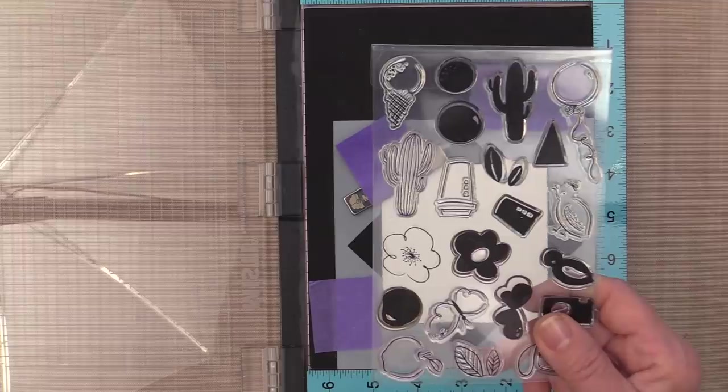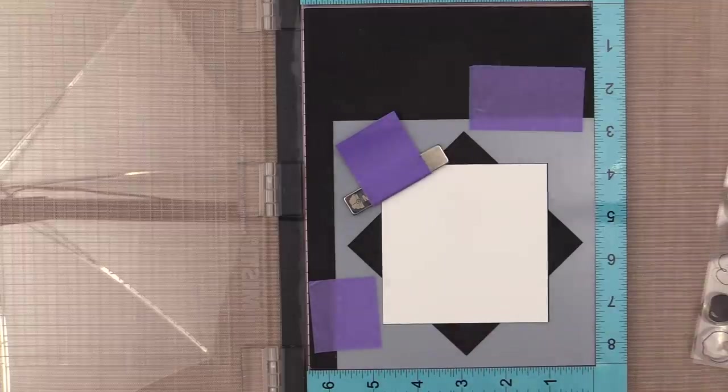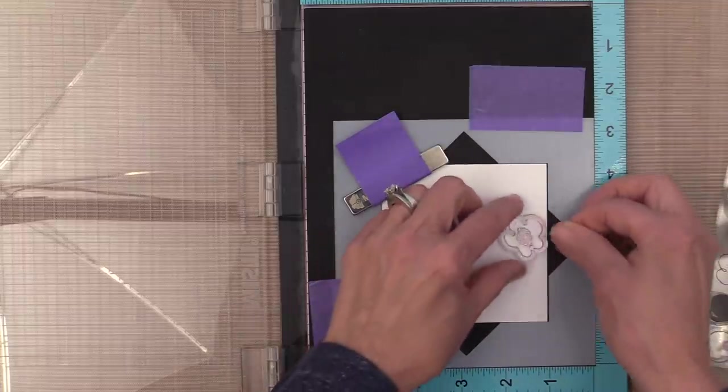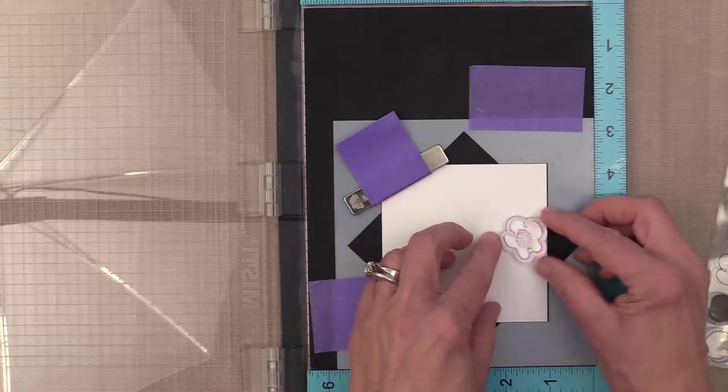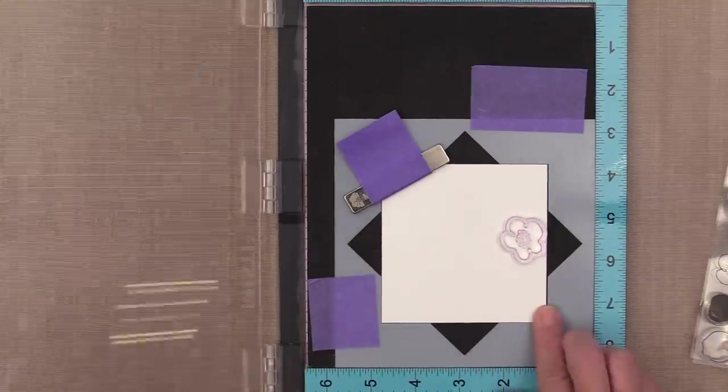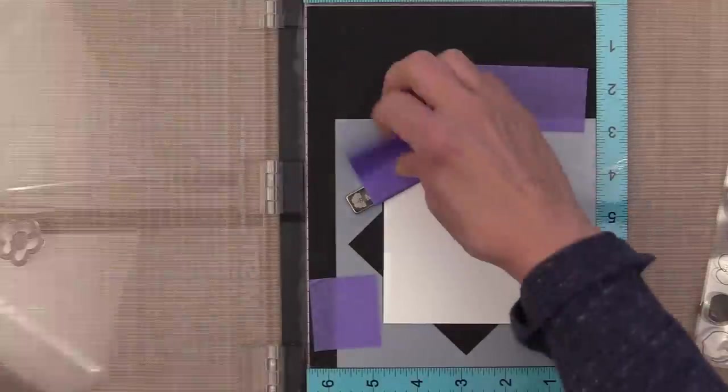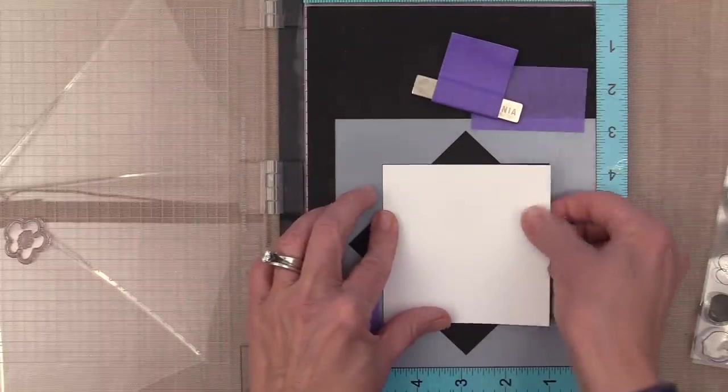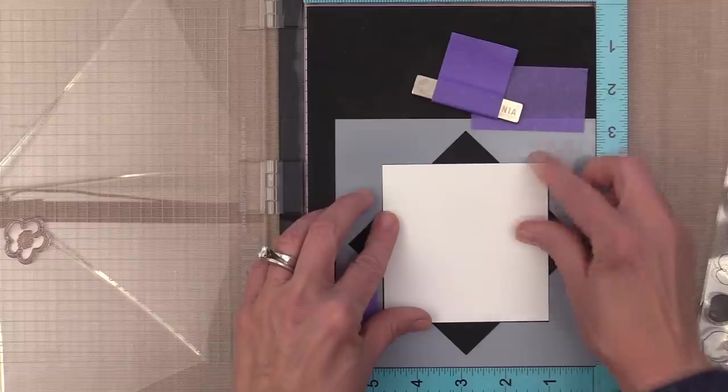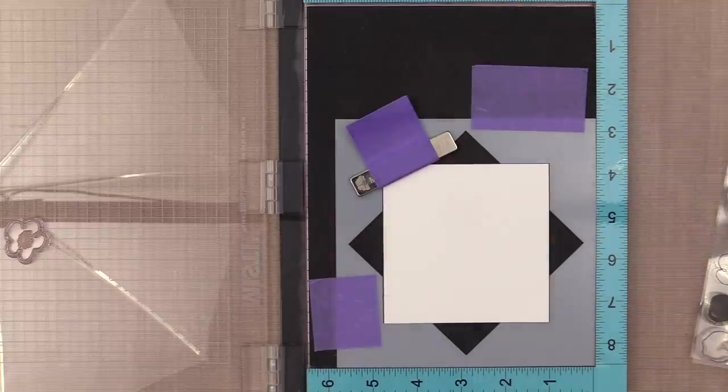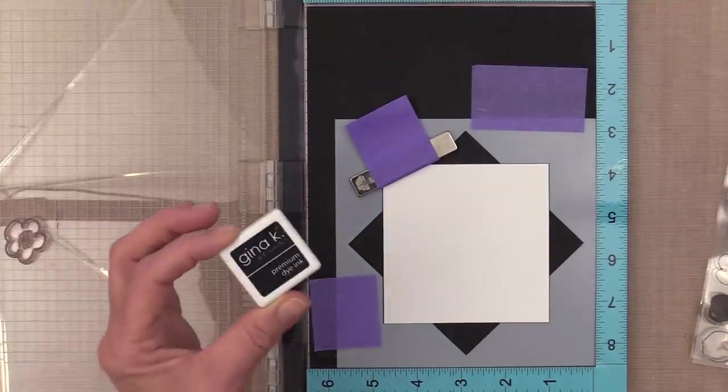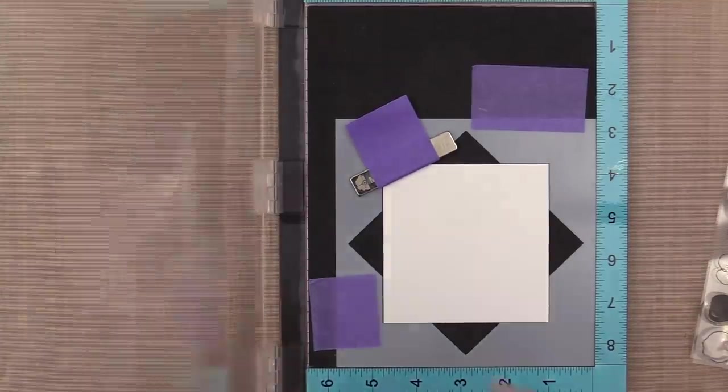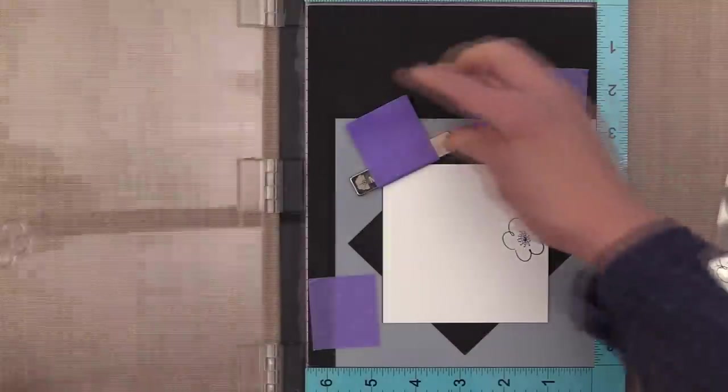I'm going to use this adorable Everyday Doodles stamp set by Essentials by Ellen, drawn by Julie Ebersole who is one of my favorite people in the world. I just love this set. I placed that stamp off to the right hand side and picked it up with the door of the Misti. You always want to make sure your cardstock is back in place. I'm going to ink this up with some Gina K Designs Black Onyx ink and stamp it.